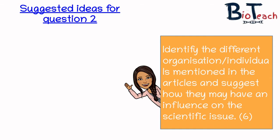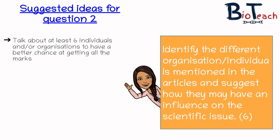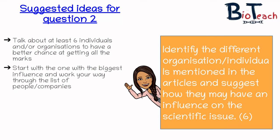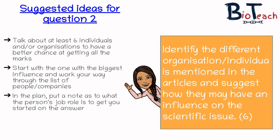For question two, you should be looking to mention six individuals and organisations to have a better chance of getting all of the marks. I usually say to my students they should start with the one who they think has the biggest influence and then work their way through the list discussing how they actually influence the issue. You might want to put a note about what each person's job is to get you started. For the six marks you don't have to mention six, but it does help, particularly if you don't go into too much detail about each.